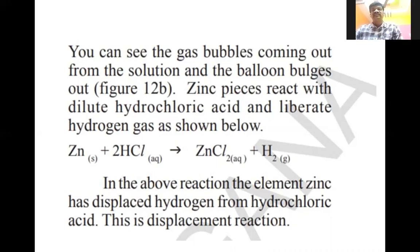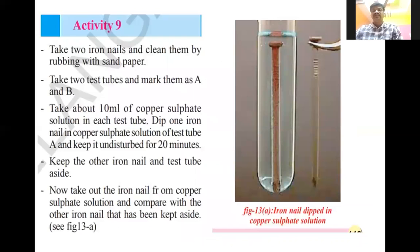Zinc pieces react with dilute hydrochloric acid and liberate hydrogen gas: Zn + 2HCl → ZnCl₂ + H₂. Chlorine is replaced with zinc metal, so a single displacement reaction occurs. In the above reaction, the element zinc has displaced hydrogen from hydrochloric acid. This is the displacement reaction.